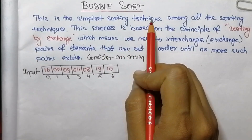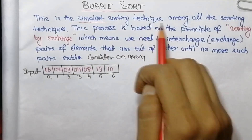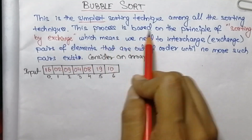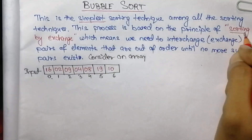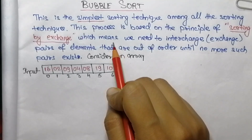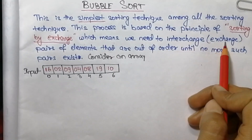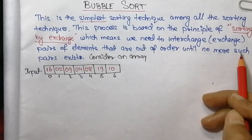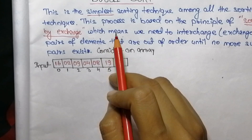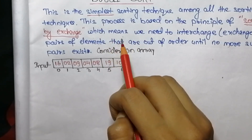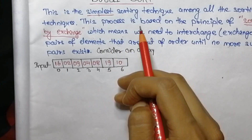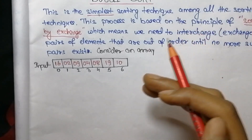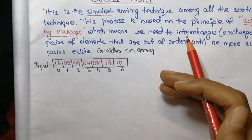So what is bubble sort? Bubble sort is the simplest sorting technique among all the sorting techniques. This process is based on the principle of sorting by exchange, which means we need to interchange, i.e. exchange, pairs of elements that are out of order until no more such pair exists. So in this process a pair of elements are exchanged repeatedly until the array is sorted. This method is easy to understand, easy to implement and easy to analyze.